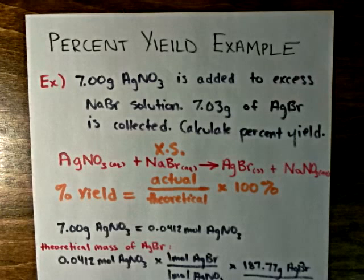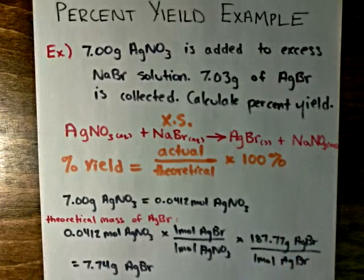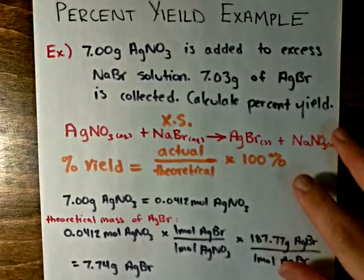Which is the theoretical mass of silver bromide. So now that we have the theoretical mass, we can calculate the percent yield.